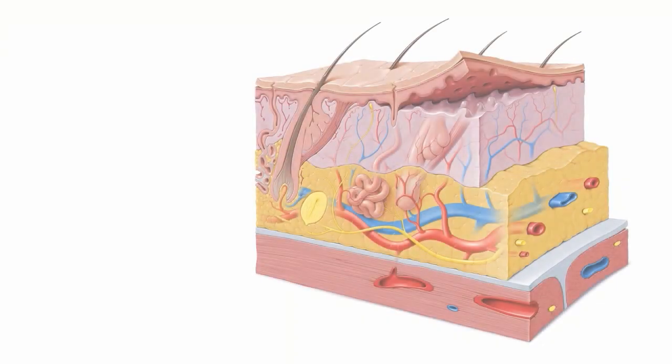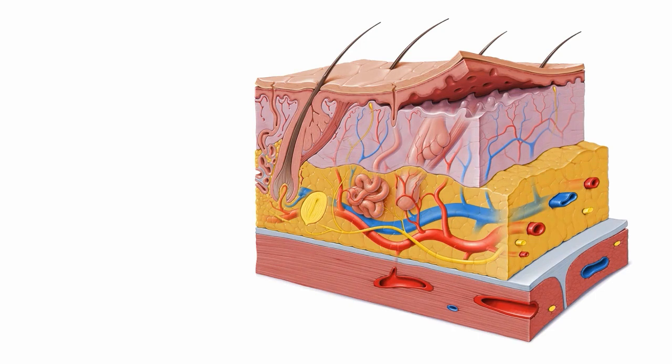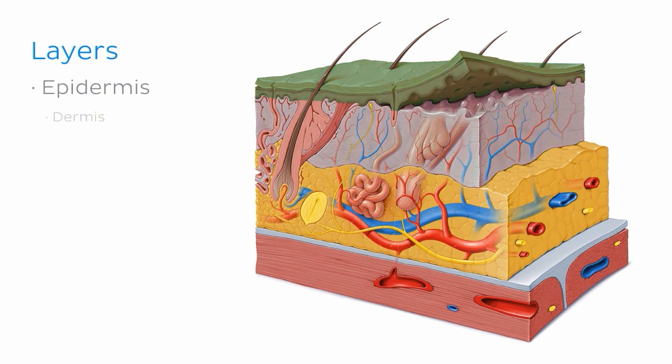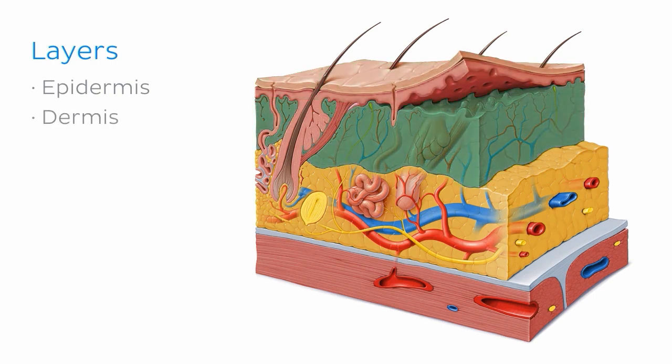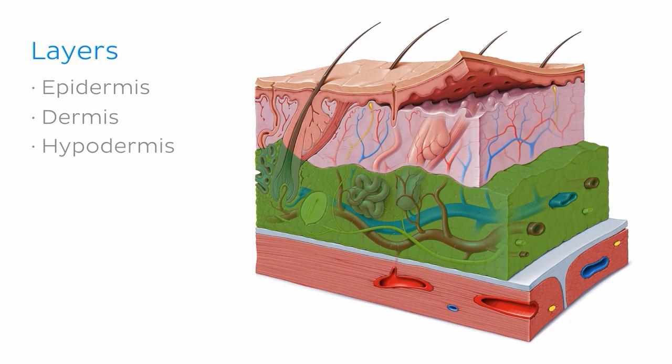First, let's look at the layers of skin. We'll use thick skin as our example and then explain the difference between thick and thin skin later on. There are three main layers of thick skin: the epidermis, which is the outermost layer; the dermis, which is the middle layer; and the hypodermis, which can also be called the subcutaneous tissue, is the deepest layer, directly overlying the fascia covering the muscles. These layers are subsequently divided into separate sub-layers, which we'll cover as we go through each in turn.